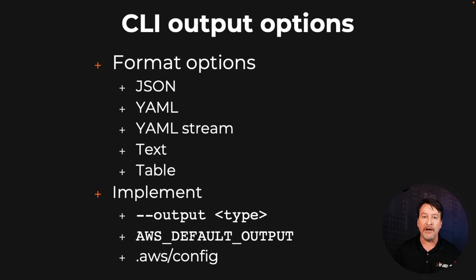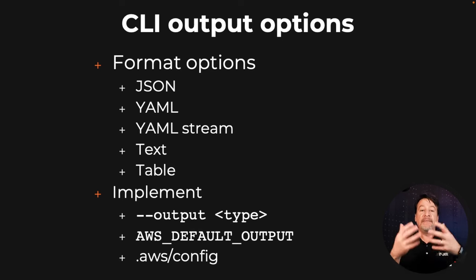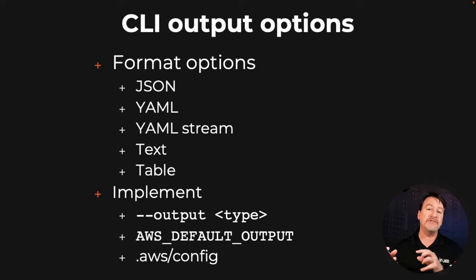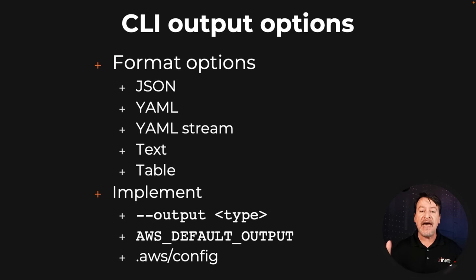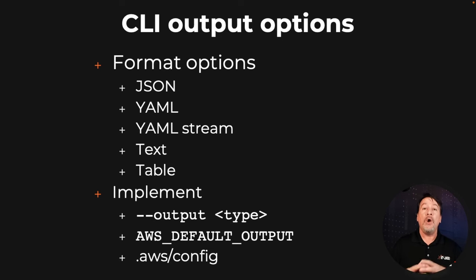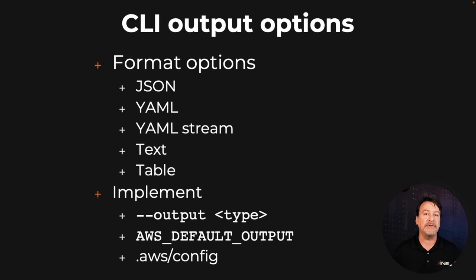What we're going to do in this one is actually use the table output. There are the format types. And then to implement it, we can either say --output, which is what we're going to do. You could use the AWS_DEFAULT_OUTPUT environmental variable, or when you do your AWS configure, the last option is output. You can simply type table, JSON, YAML, whatever the case may be.